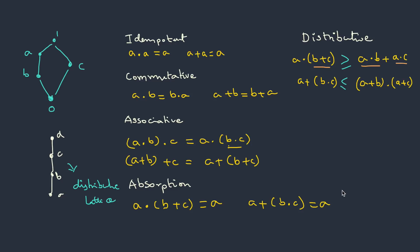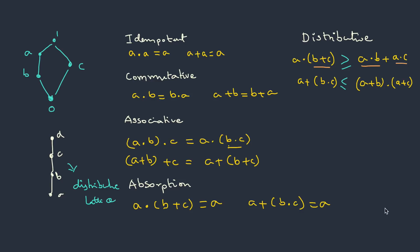Let me give you some examples of distributive and non-distributive lattices. Every chain is a distributive lattice. The power set lattice with subset operation, which we covered in the previous lecture, is also a distributive lattice — you can check it. These other diagrams are non-distributive lattices. Sometimes in exams, they will directly give you a diagram and ask you to check it, so these are frequently asked diagrams — better memorize them.